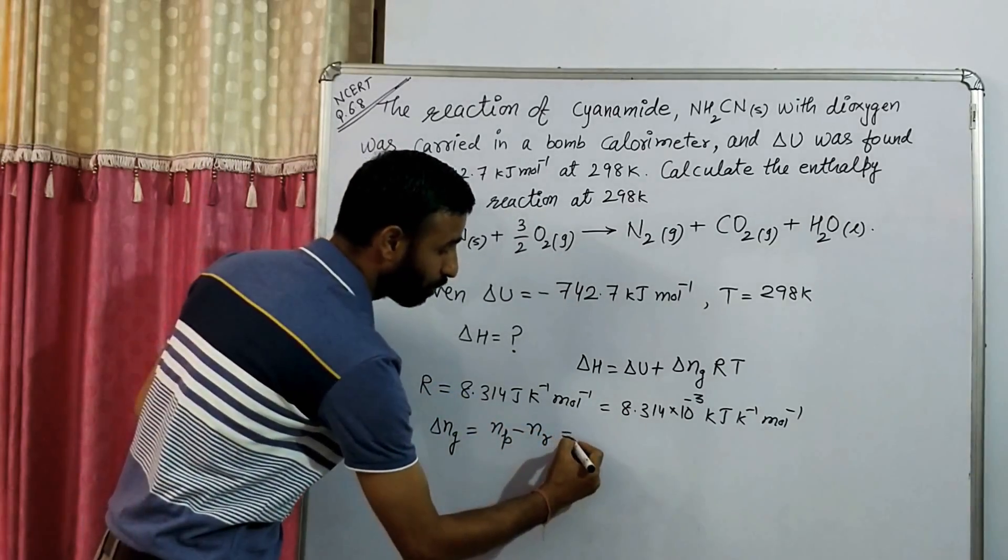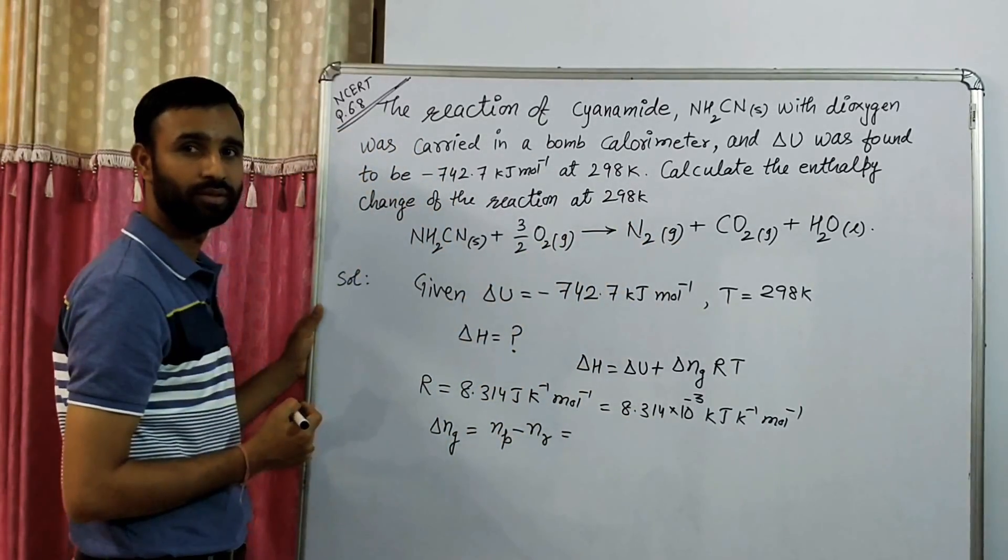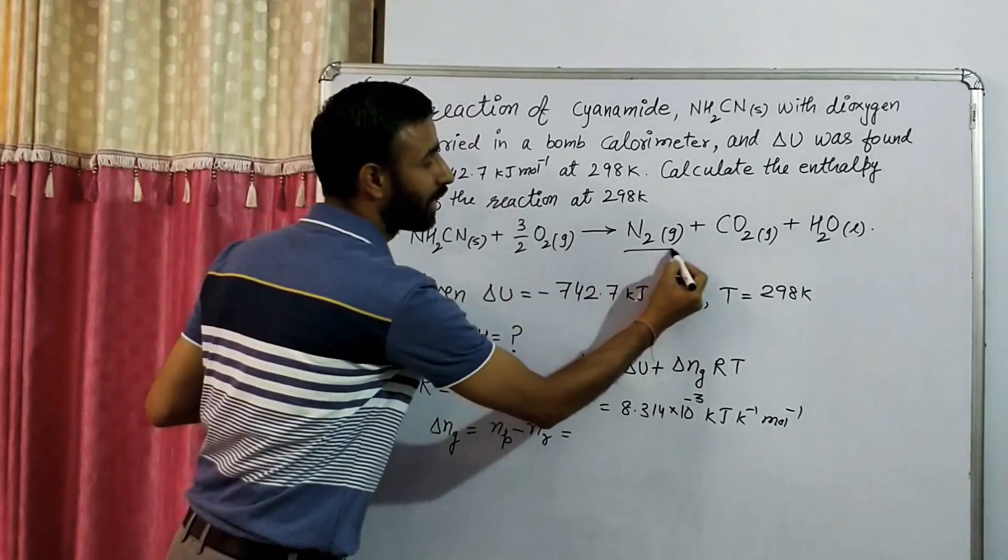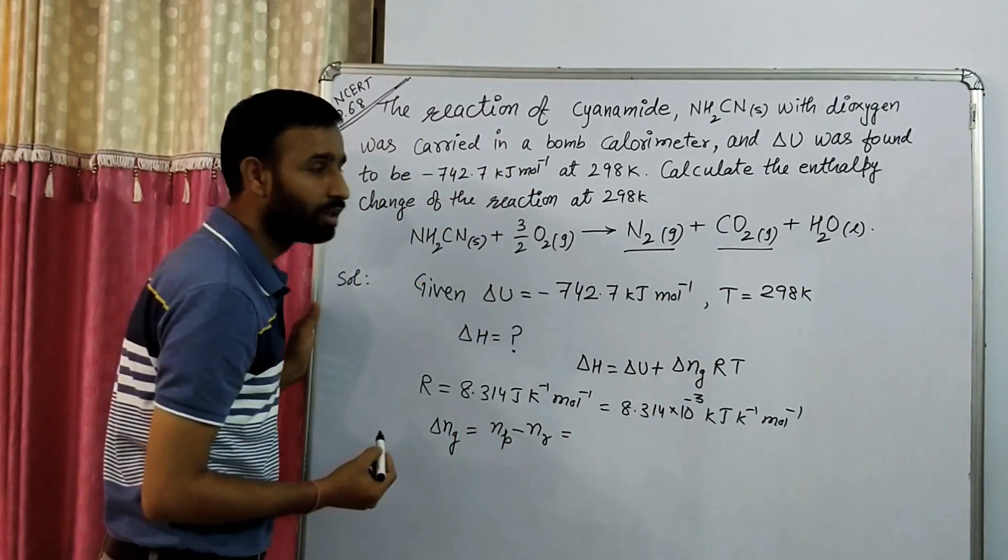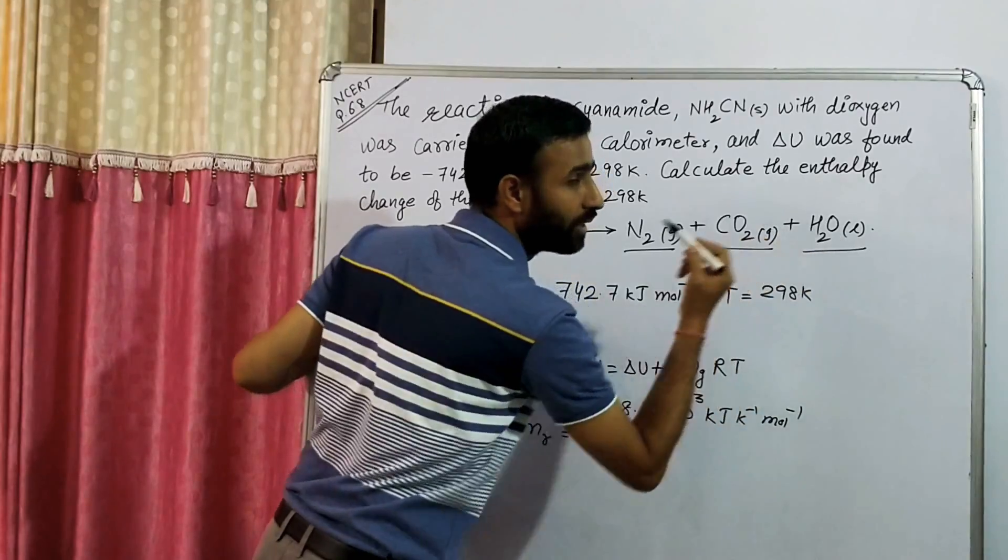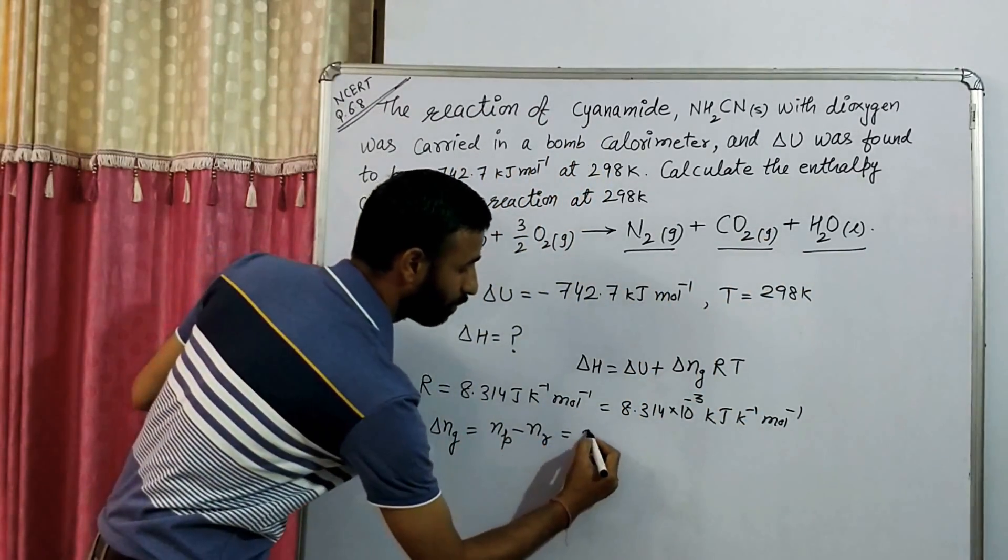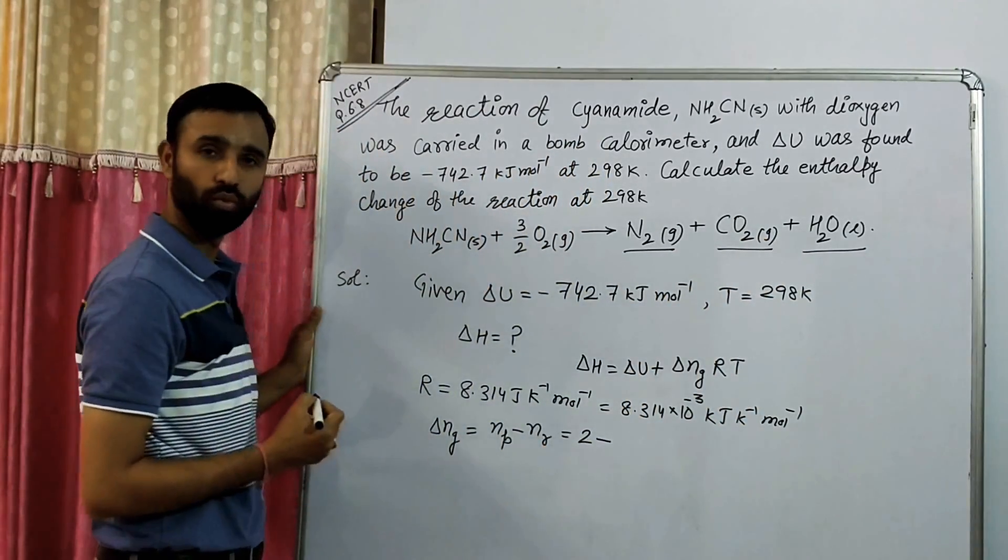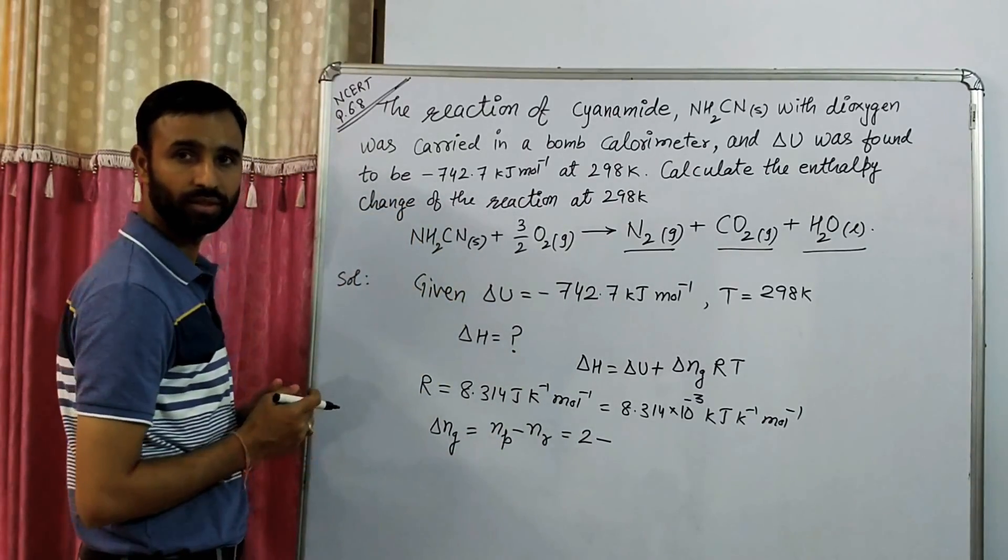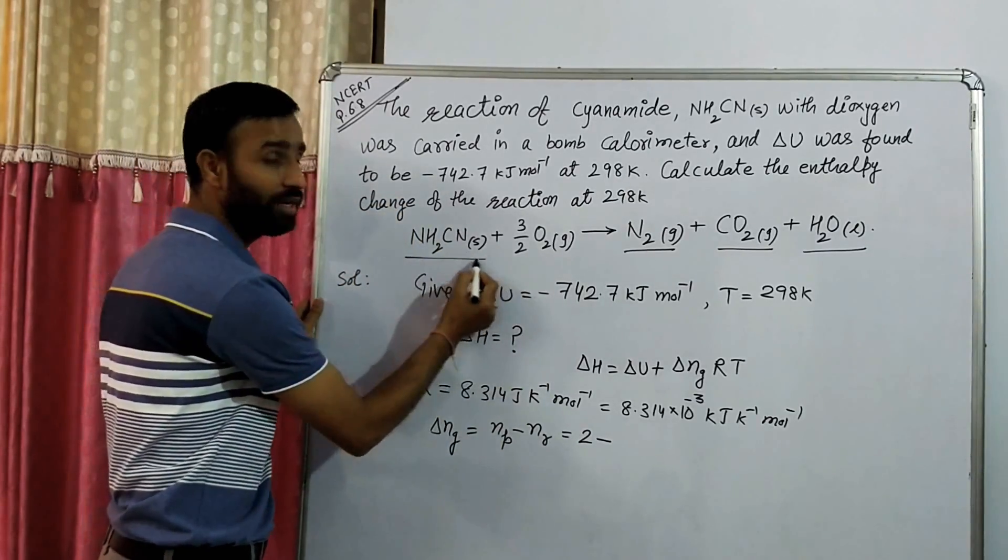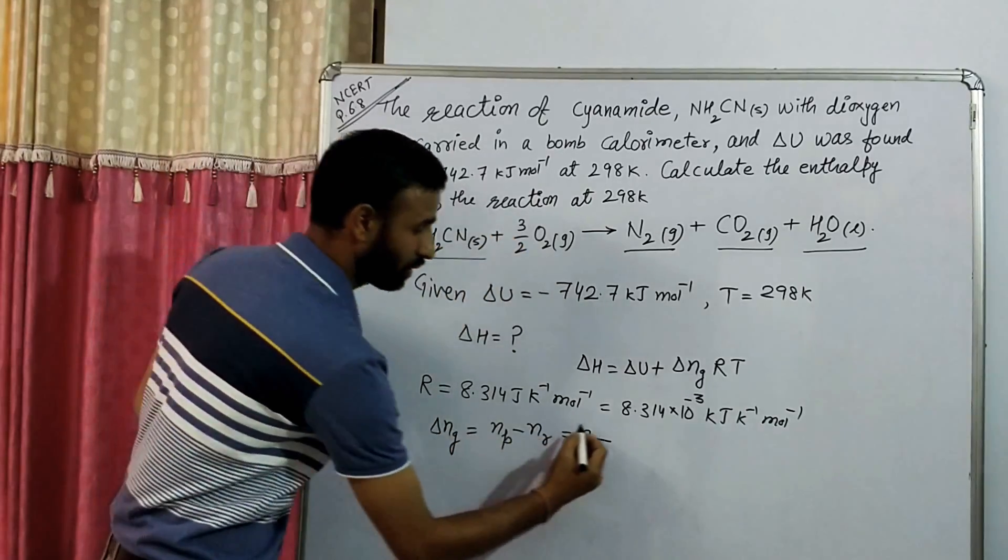So in the product, how many gaseous moles are there? Two. One nitrogen gas and one CO2 gas. H2O is a liquid. So number of gaseous moles are two. And how many gaseous moles of reactant are there? Three by two. Very good, because it is solid, so it is three by two.